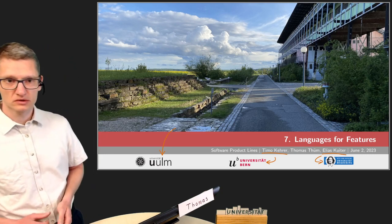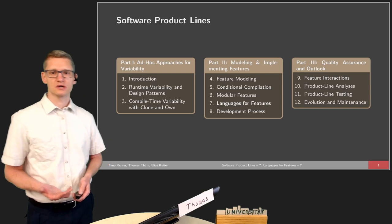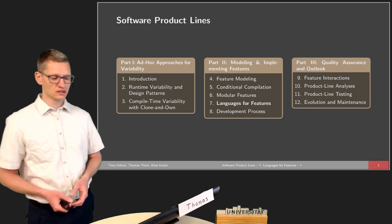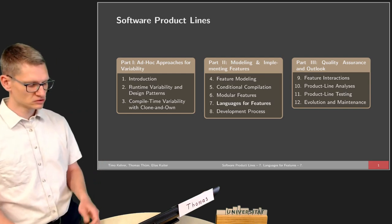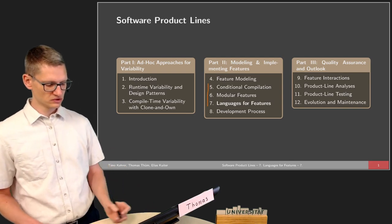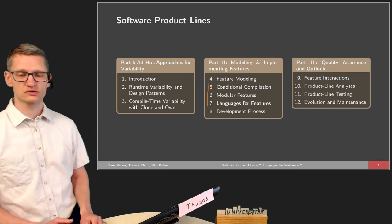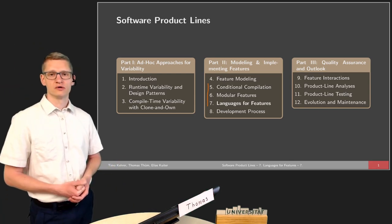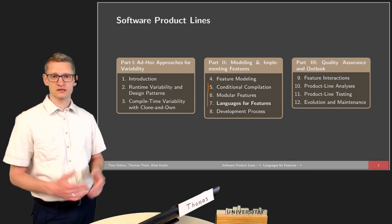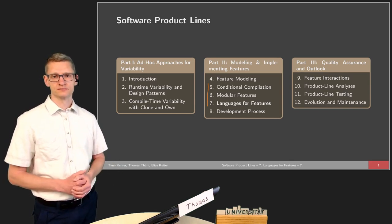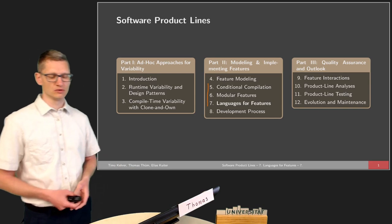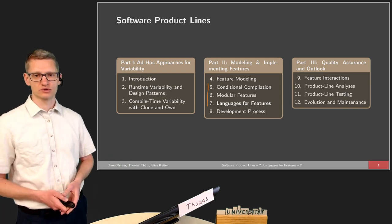This lecture will be about languages for features. We have already seen other topics in this course and we are in the middle of part two. We already talked about implementation in the previous two lectures, so this will be the third of three lectures on the implementation of features — how we can realize the vision of software product lines on an implementation level. This will be the last one, and there will also be a recap in the next lecture when we compare all those languages with each other.